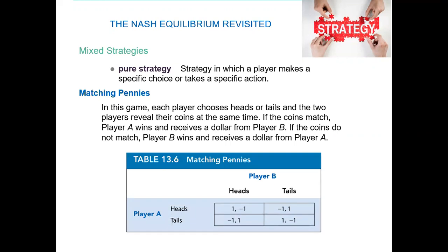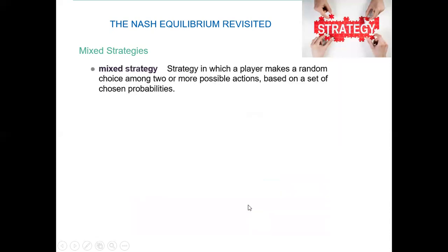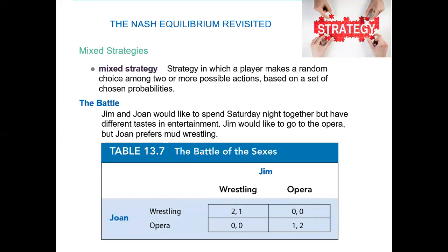A pure strategy is one where a player makes a specific choice — for example, playing heads or tails. If both choose heads, one gets a point and the other gets a negative. A mixed strategy means a player makes a random choice — sometimes advertising, sometimes not, depending on the mood. For instance, a textile brand that only advertises during Ramadan but occasionally breaks the pattern and advertises at other times.